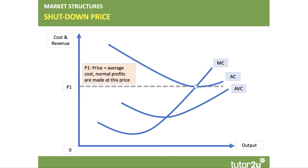On a diagram here, P1 is quite a high price, and that price is sufficient to just cover all costs — average cost per unit. By the way, the gap between average cost and average variable cost here is the fixed cost per unit. So at P1, normal profits can be made at that price — you can cover your costs.